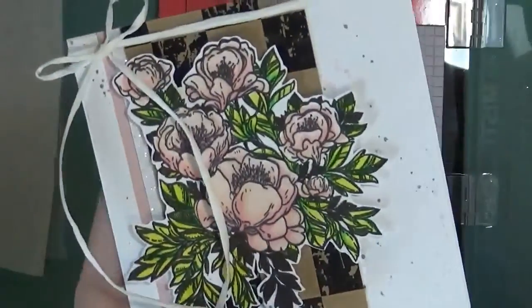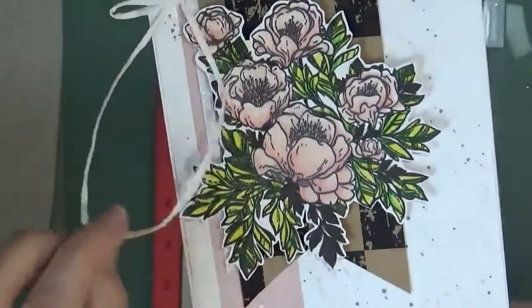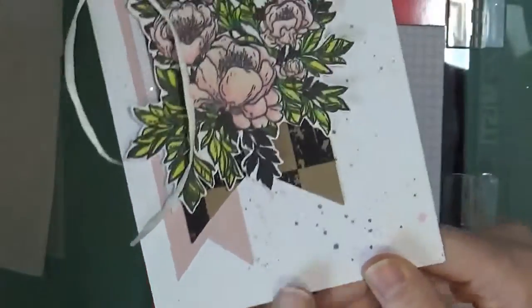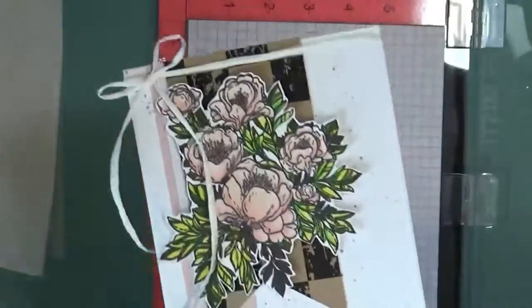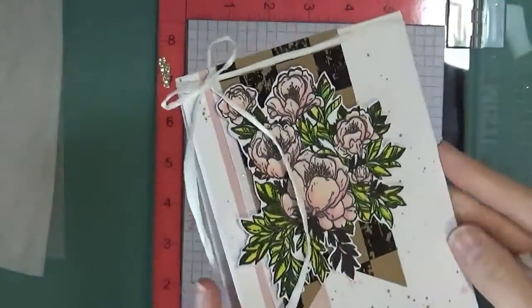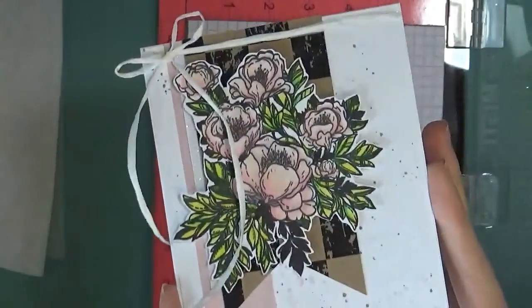I want to show you one that I've already created. I stamped this out. I colored it with some Prismacolor colored pencils. I splattered the background a little bit with some Distress inks and then layered some papers behind it. So this is what it looks like if you color it and stick it on a card.